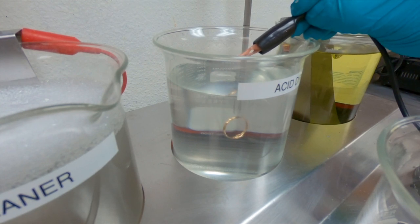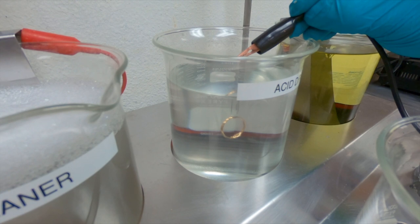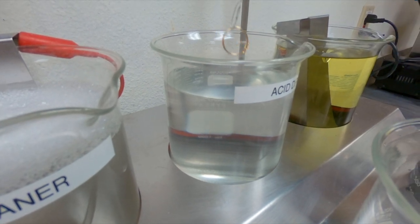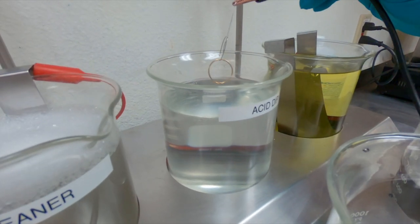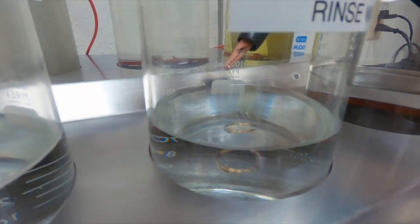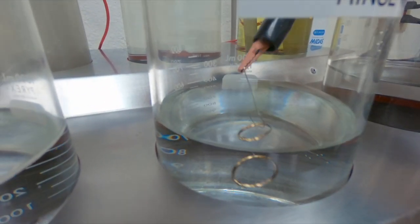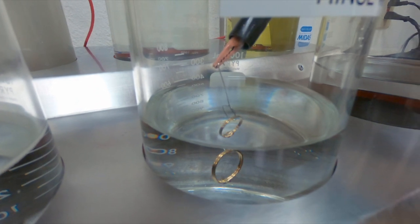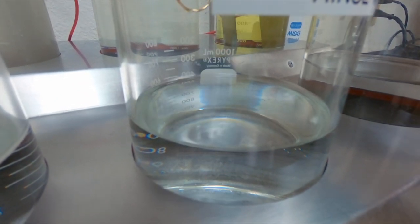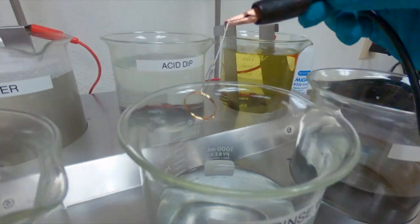We'll submerge the piece in the acid dip for 30 seconds to one minute. Once that's done, we're going to shake off any excess acid dip, go directly into our dedicated distilled water rinse and agitate the piece to make sure we get all that acid dip rinsed off. Once we're rinsed off, we're ready to go plate.